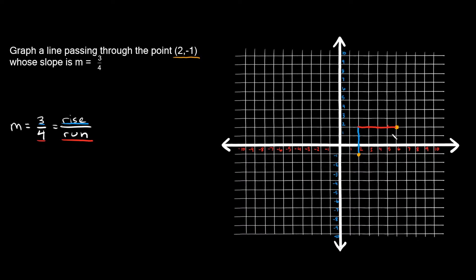You just have to draw a straight line between these two points and extend the line as much as you want. Here is your line passing through point (2, -1) with a slope of 3 over 4 — up 3 over 4. If we go up 3 spaces again and over 4 spaces again, we hit another point along this line, so we know we graphed it correctly.